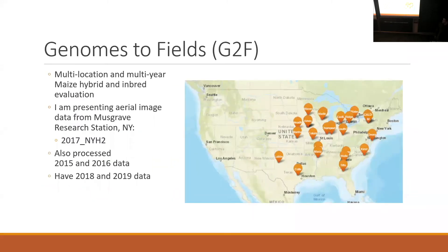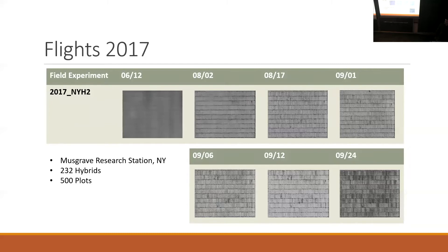I'm presenting today a single field experiment that's part of the Genomes to Fields consortium. Genomes to Fields is a multi-location, multi-year hybrid and inbred evaluation. Here I'm showing data from 2017 at NYH2, though I also have data from 2015 and 2016 and am working on 2018–2019. In 2017, for this experiment, we had seven flights collected by Nick Casemore, with 500 plots total and 232 hybrids across different dates throughout the growing season.